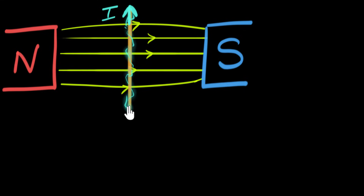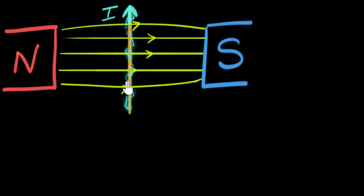To figure out how the wire pushes on the magnets, we ask: how does the wire do this? The wire creates its own magnetic field because of the current, and it's that magnetic field that pushes on the magnets. So let's remove the external magnetic field and concentrate on the field generated by the wire.